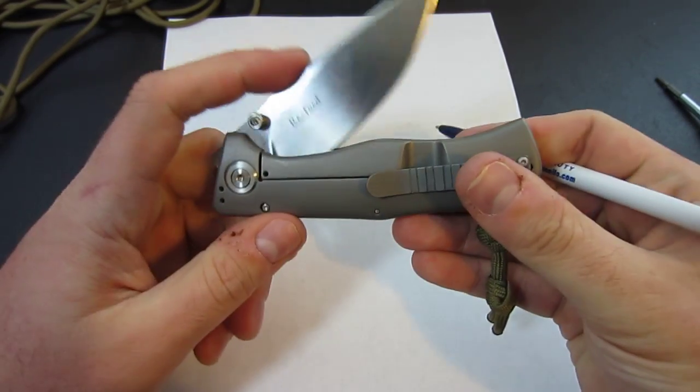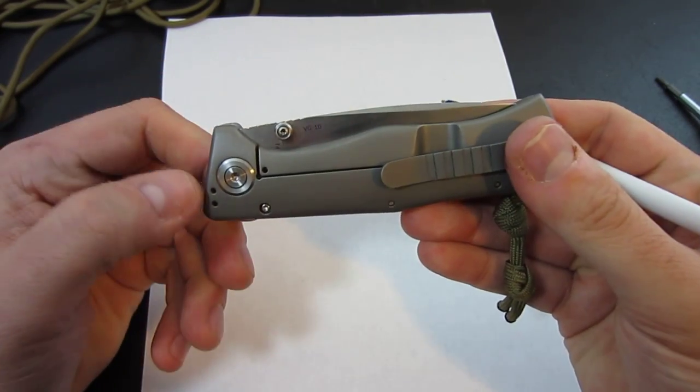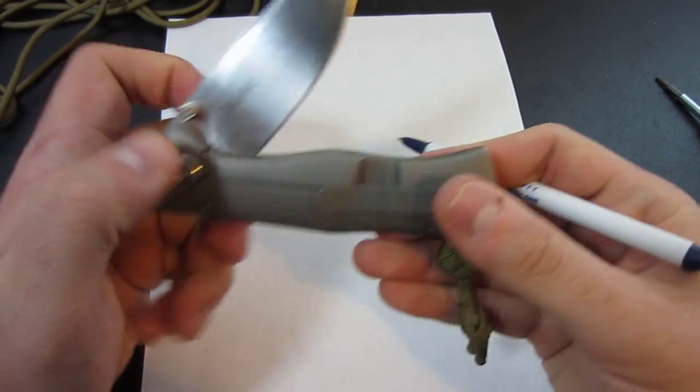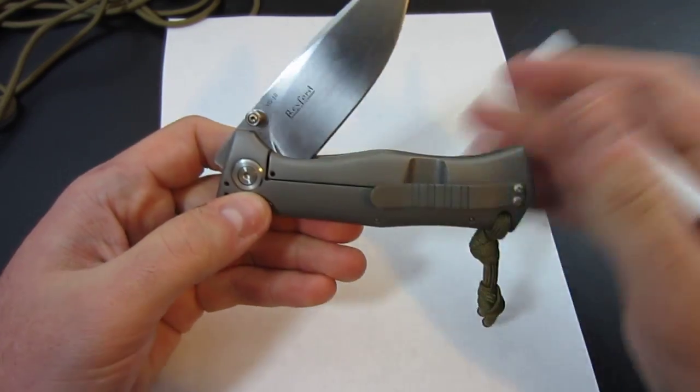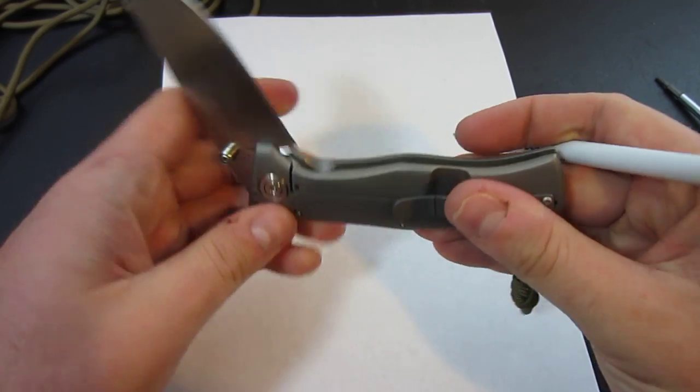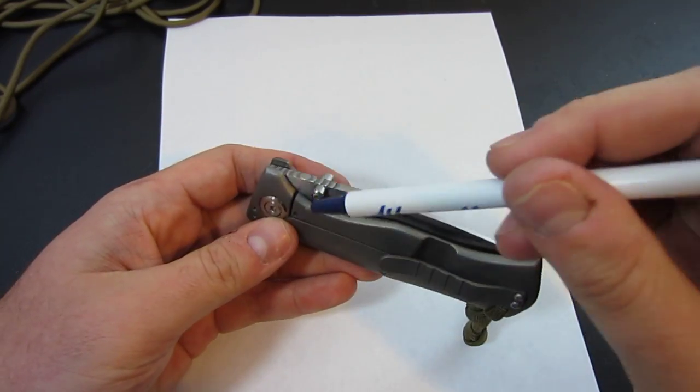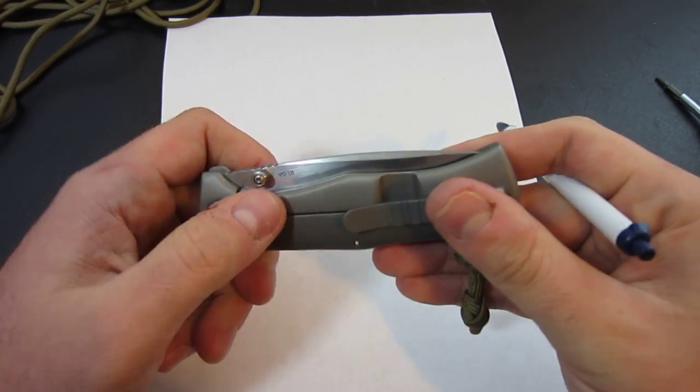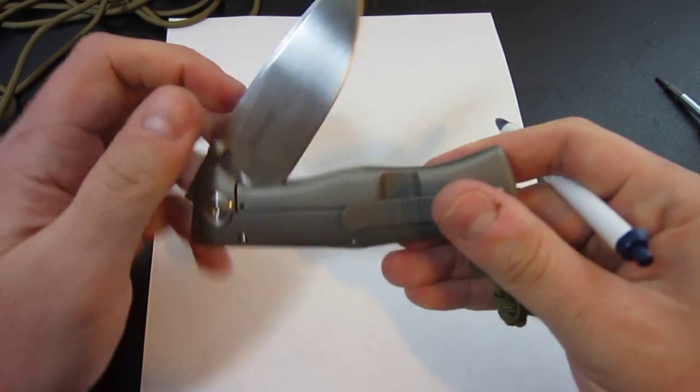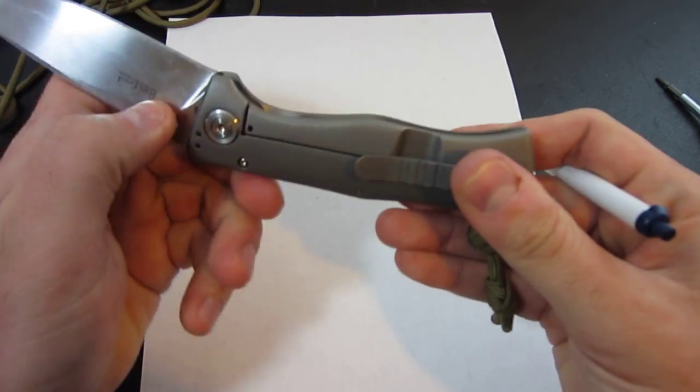The ball detent does two things. It falls into that hole and helps keep it closed, and it also gives it something small to ride on when you're opening the blade. So, even on Emersons that don't have a working detent, in terms of keeping it closed on this side, it still has a ball in order for it to smoothly ride open.